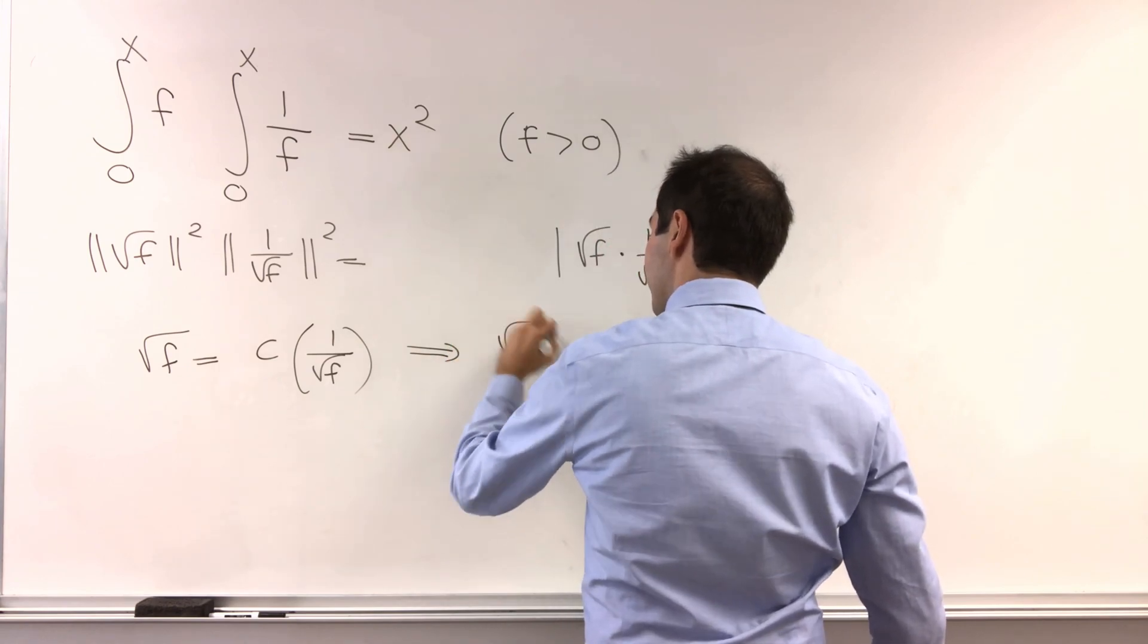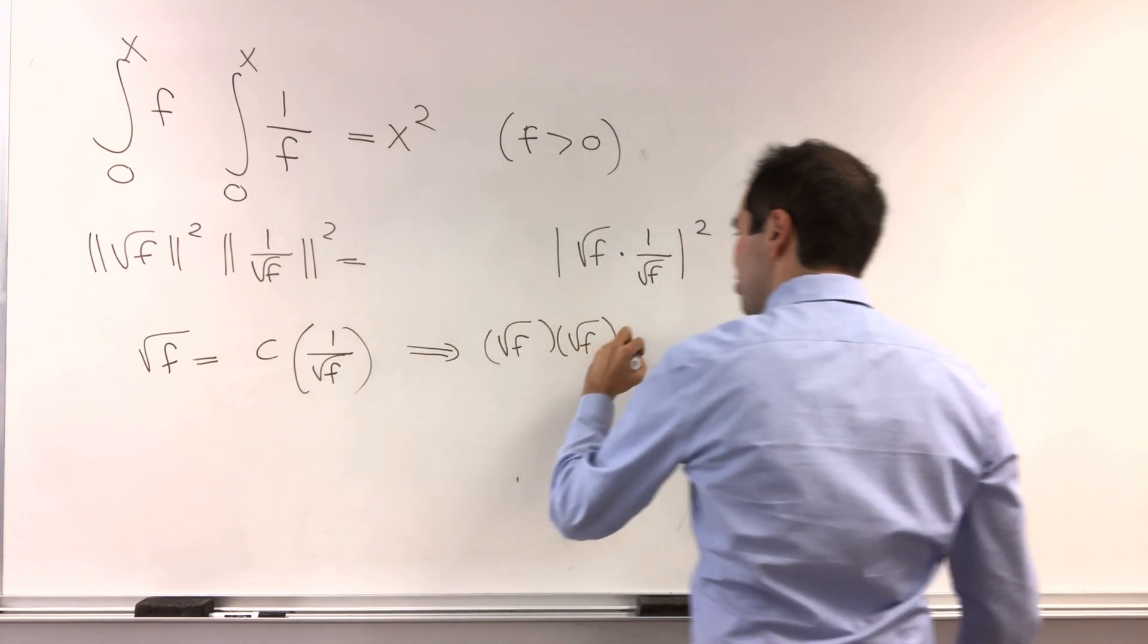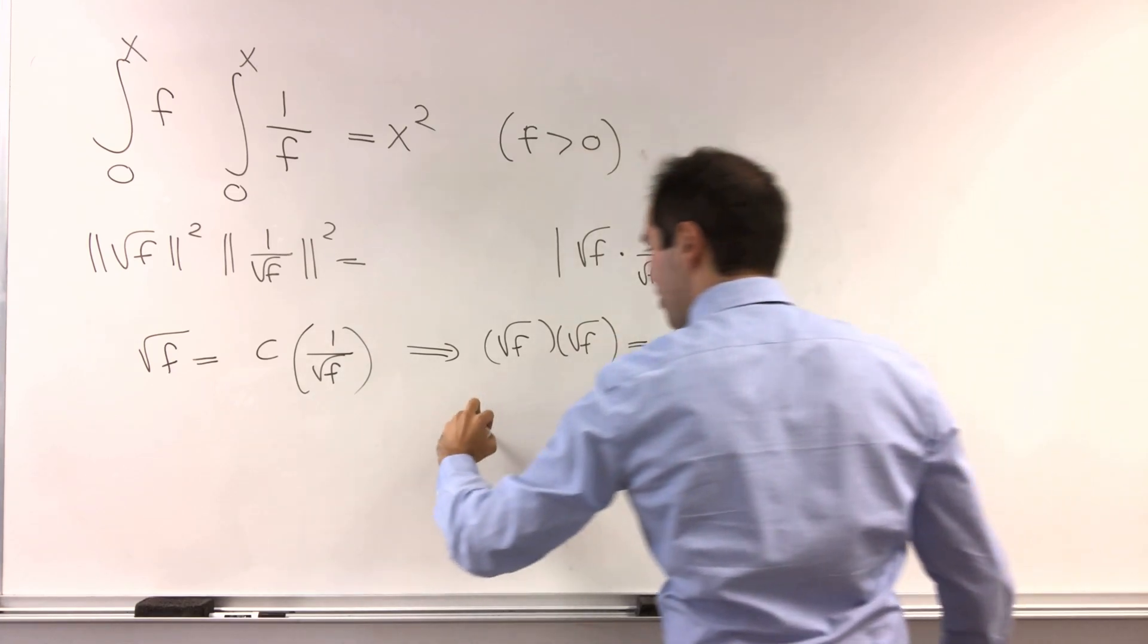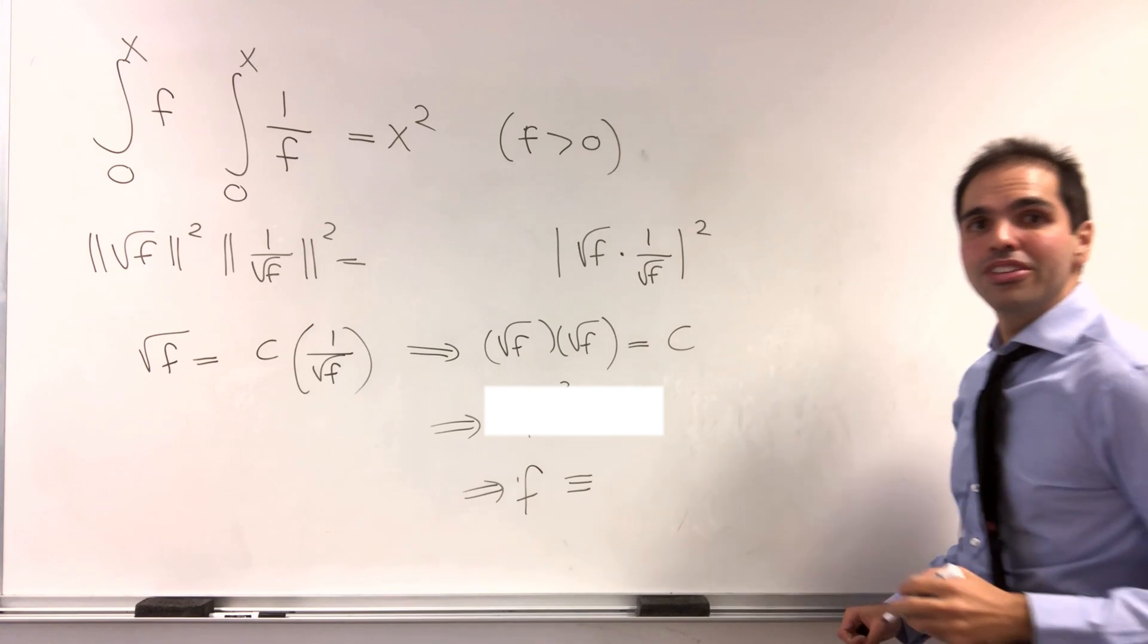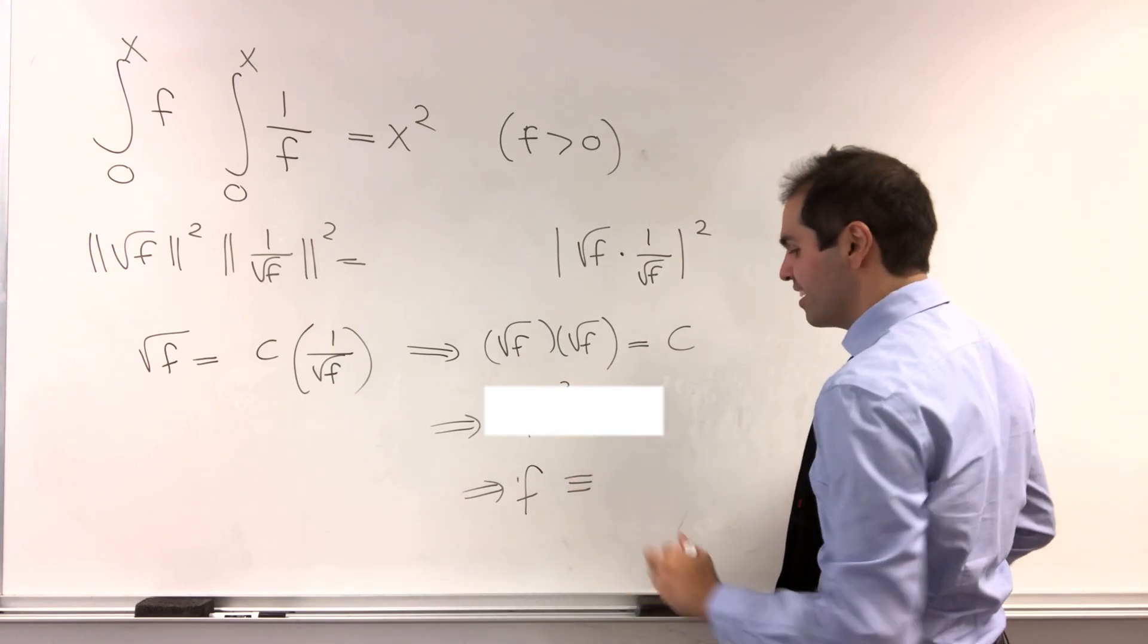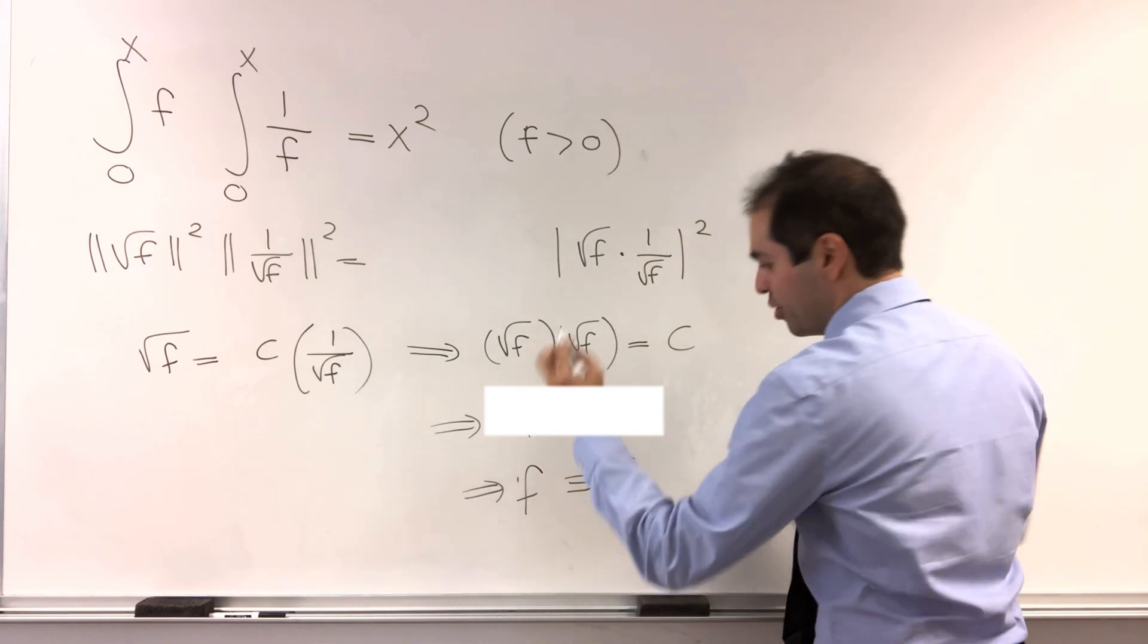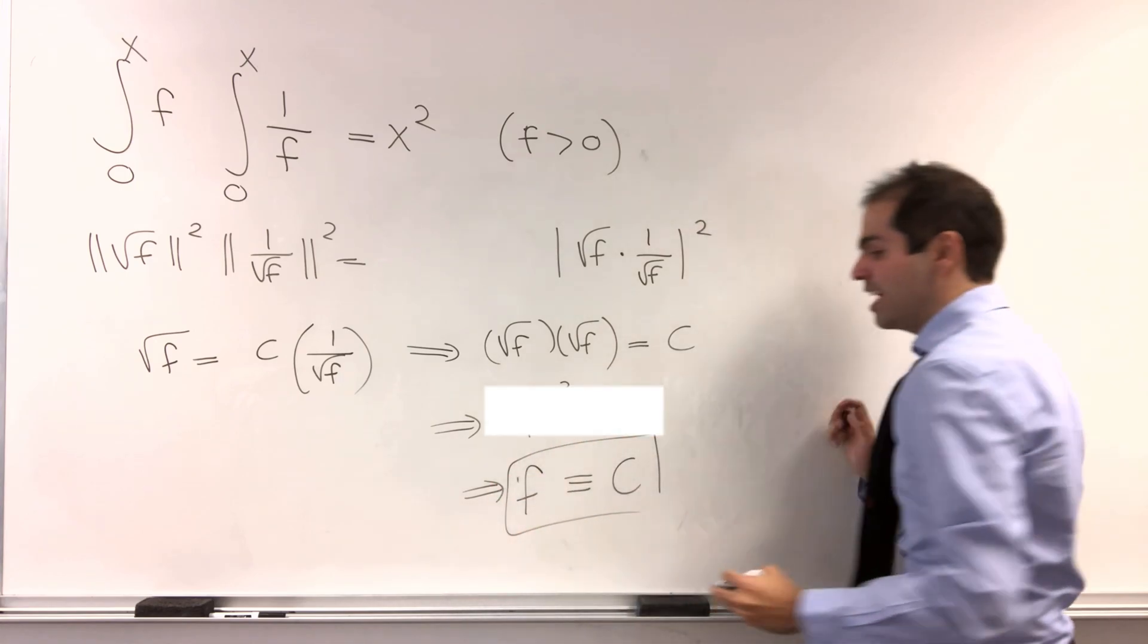And what this just implies is that square root of f times square root of f equals a constant just by cross-multiplying. So f is, and again, if it's continuous and everything, identically equal to a constant, square root of c, but we just label it as c.